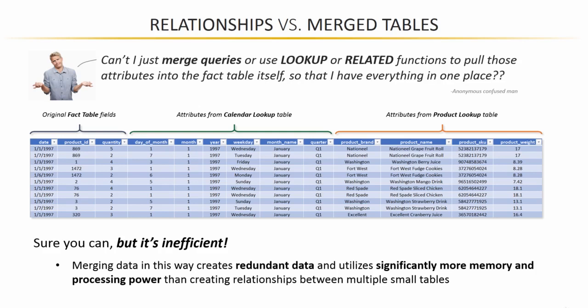Like we talked about in that normalization lecture, merging data like this creates a ton of redundant information. As a result, it utilizes way more memory and a lot more processing power than simply creating relationships between multiple small thin tables. So next time you feel that instinct to mash everything together, to merge it, to stitch it manually — just say no.